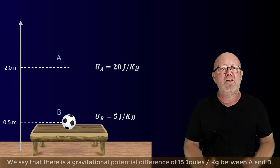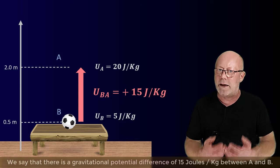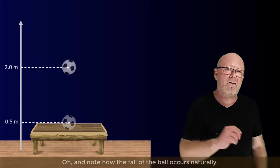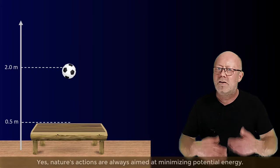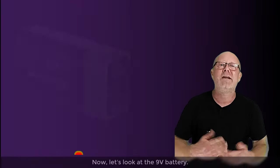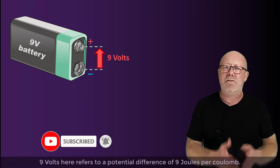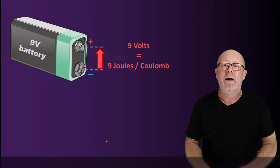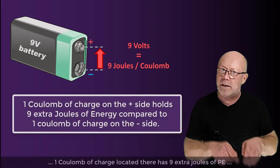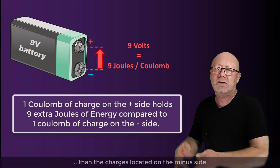We say that there is a gravitational potential difference of 15 joules per kilogram between A and B. Note how the fall of the ball occurs naturally — nature's actions are always aimed at minimizing potential energy. So now let's look at the 9 volt battery. 9 volts refers to a potential difference of 9 joules per Coulomb. This means that on the positive side of the battery, one Coulomb of charge located there has 9 extra joules of potential energy than the charges located on the minus side.